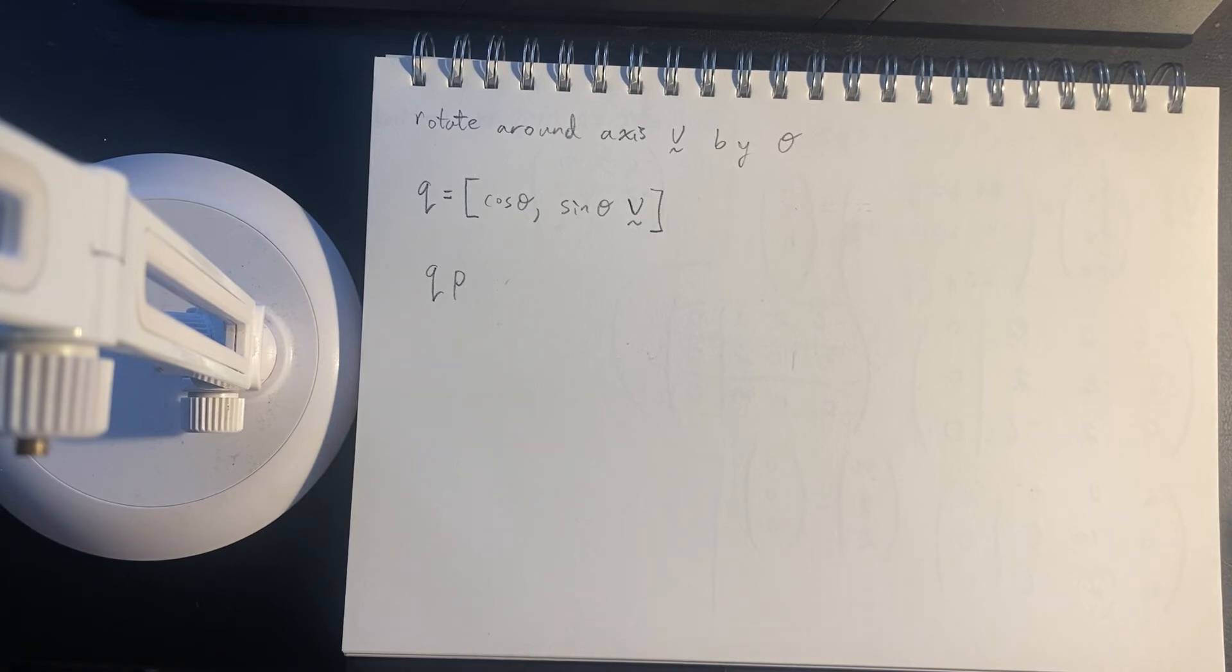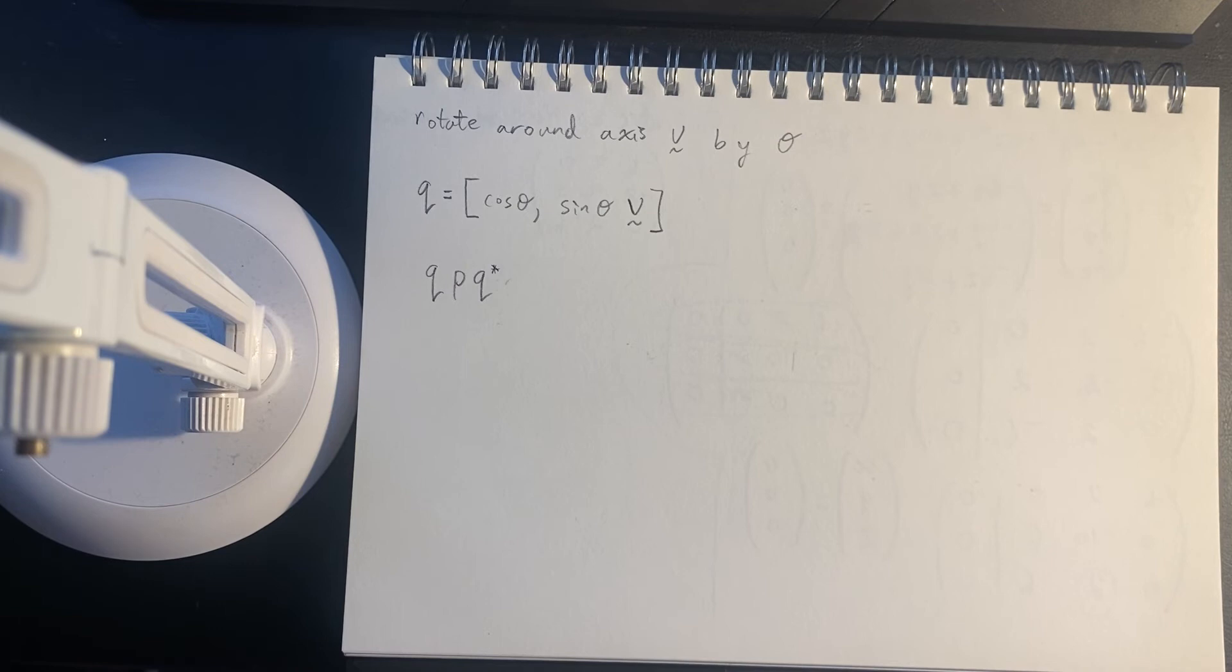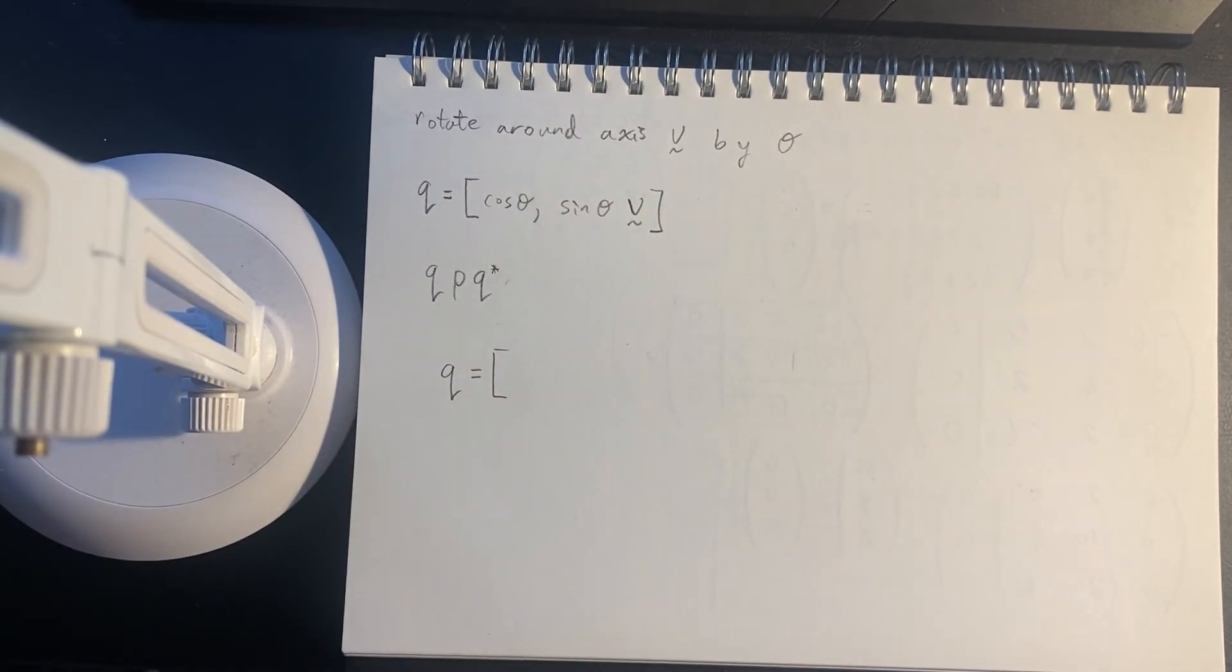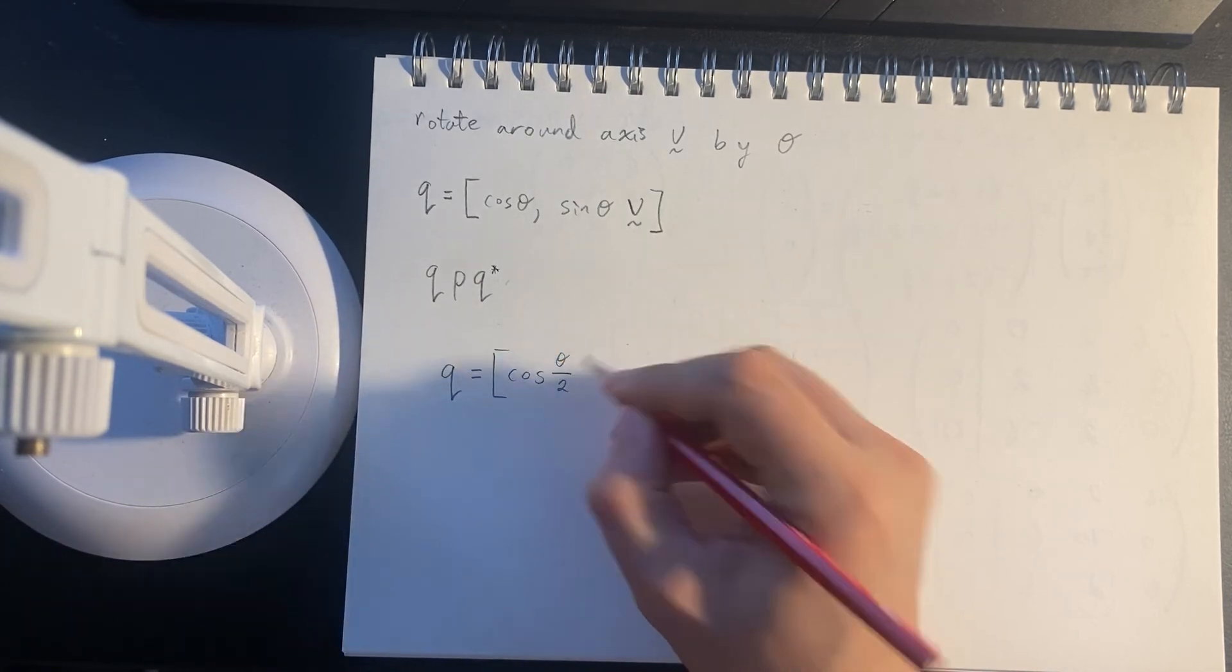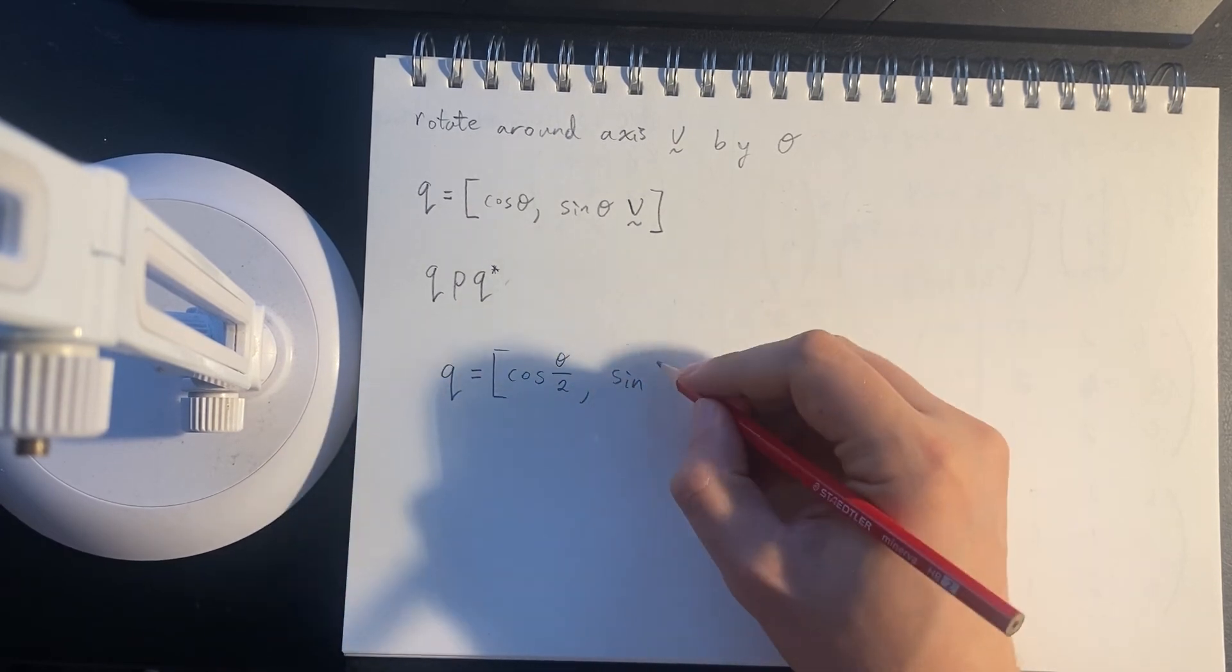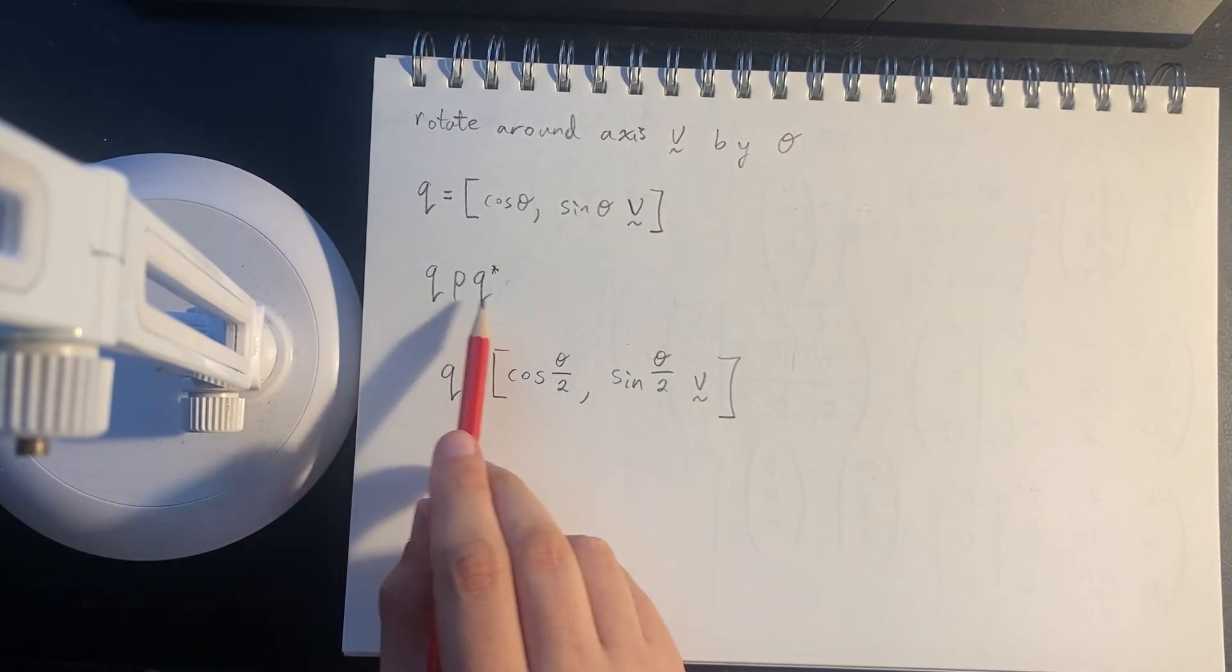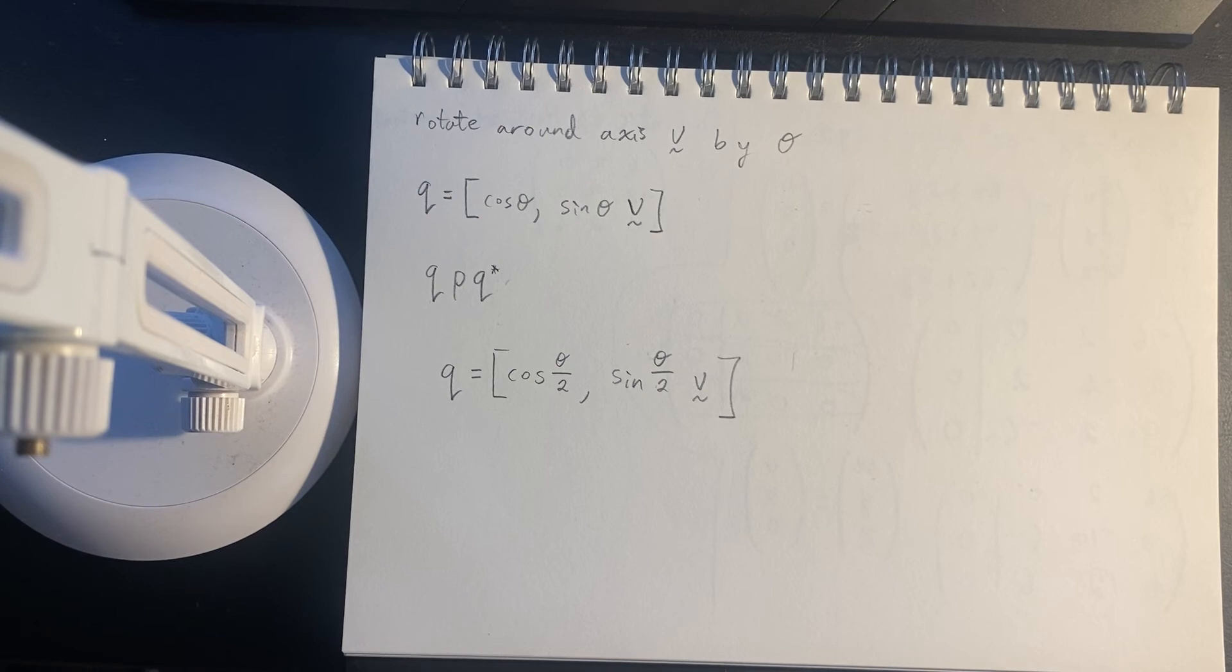So what we do instead is we multiply, we also multiply by the conjugate of q, and then what we get is, and this is where I'm sort of being a little hazy on the details, because they're not super important. I mean, they are, but they come down to a lot of messy multiplications and things. But what we really need to know is if we take cosine of θ/2, and then sine θ/2 times the axis. Now, the reason it's a half is because we're actually doing two multiple, uh, two rotations, two multiplications, so that's why we have that.